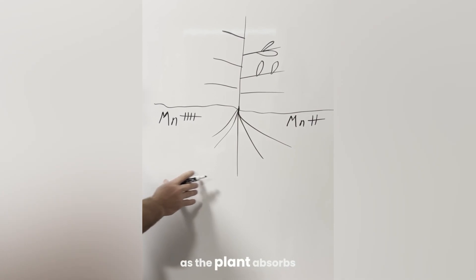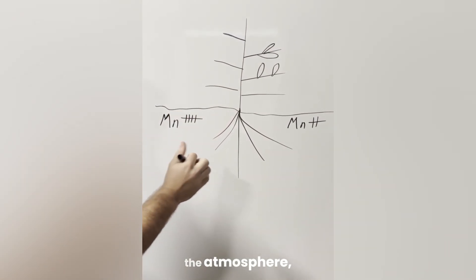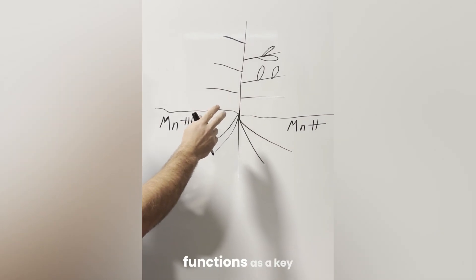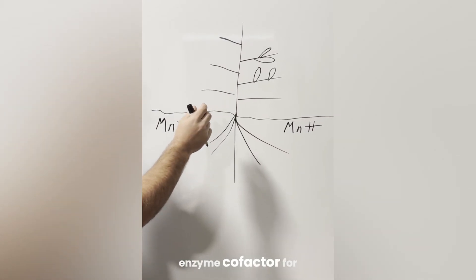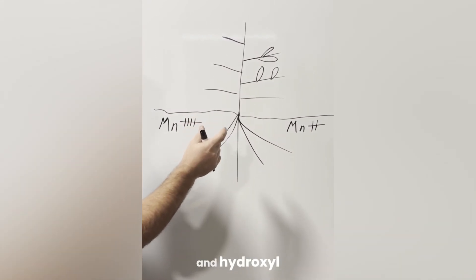as the plant absorbs water from the soil, and in the case of some plants when it absorbs water from the atmosphere, the first step in the photosynthesis process is that manganese functions as a key enzyme cofactor for water hydrolysis, where the water molecule gets split into hydrogen and hydroxyl, H and OH.